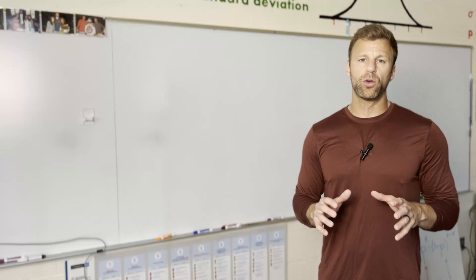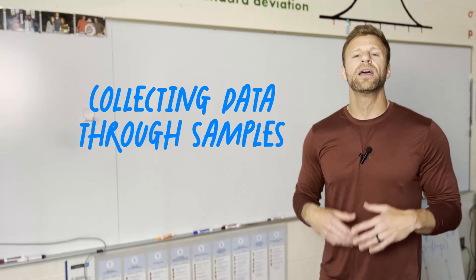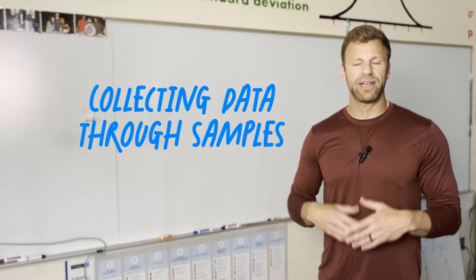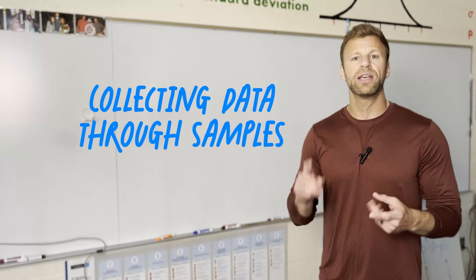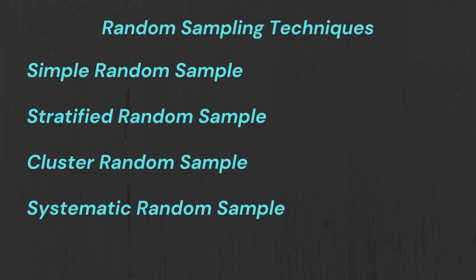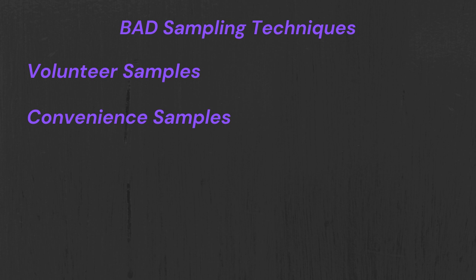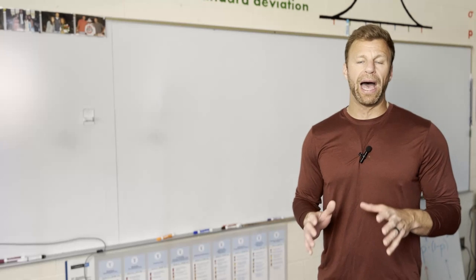The second route that this FRQ question could go is dealing with collecting data. So, here, you want to make sure you know a couple things. The different collecting data techniques. Simple random, stratified, cluster, systematic. But you also want to make sure you know the bad ones as well because they might be asking about those. Using volunteers or using something out of convenience. Then you've got to know all the different ways you could be biased.